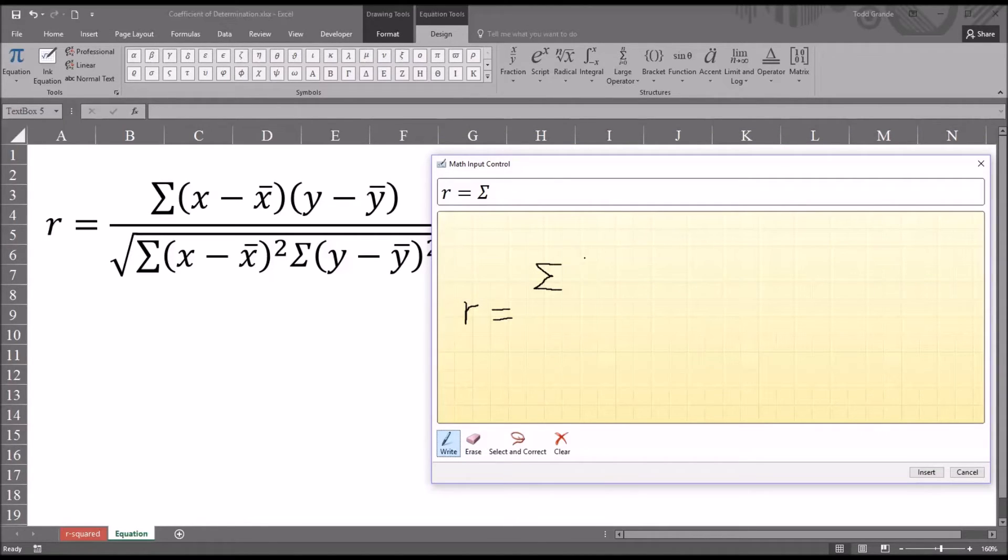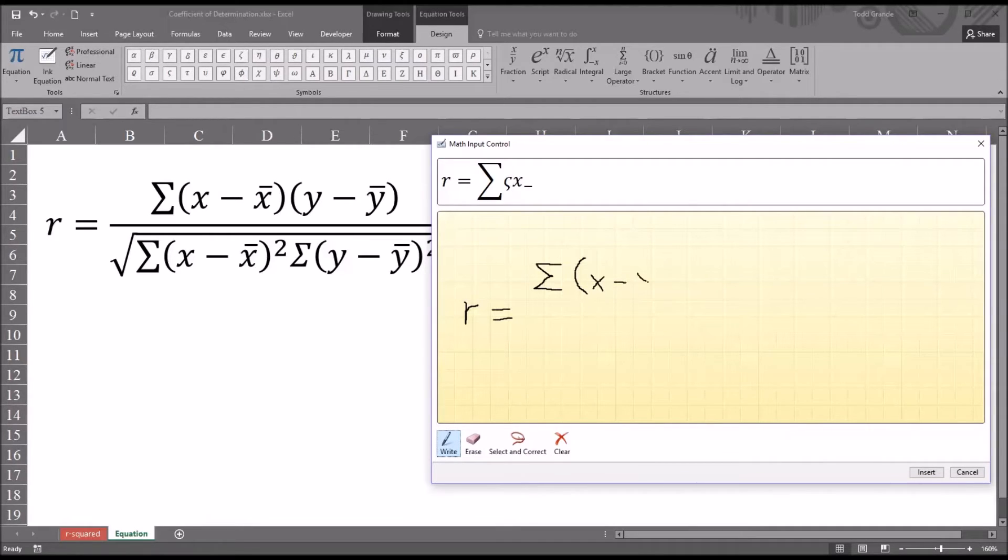And then X minus X bar. And you can see now it has parenthesis as I intended. And then again open parenthesis Y minus Y bar. And of course my handwriting is far from perfect here. But Excel picked it up. Y minus Y bar.